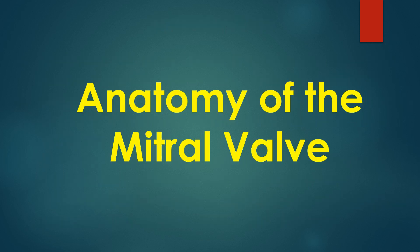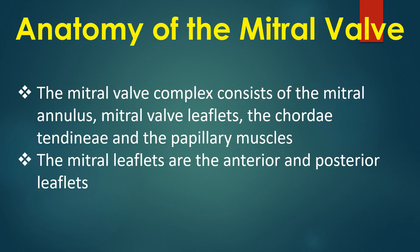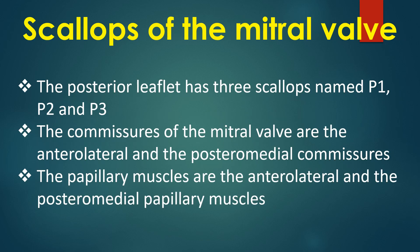Anatomical considerations of the mitral valve are important when considering mitral valve repair, either surgically or by percutaneous transcatheter techniques. The mitral valve complex consists of the mitral annulus, mitral valve leaflets, the chordae tendineae and the papillary muscles. The mitral leaflets are the anterior and posterior leaflets. The posterior leaflet has three scallops named P1, P2 and P3.